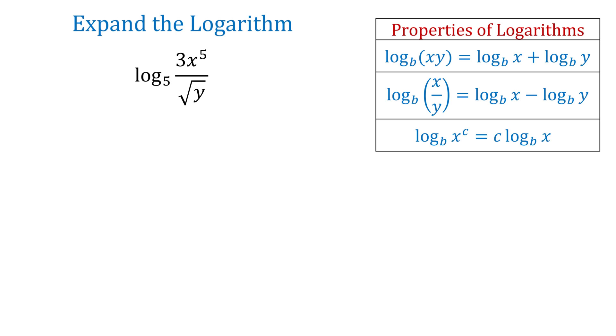In the product property, the logarithm of a product is expanded as a sum of two logarithms. In the quotient property, the logarithm of a quotient is expanded as a difference of two logarithms. And in the power property, if we have the logarithm of an exponential expression, then this exponent is moved in front of the logarithm.